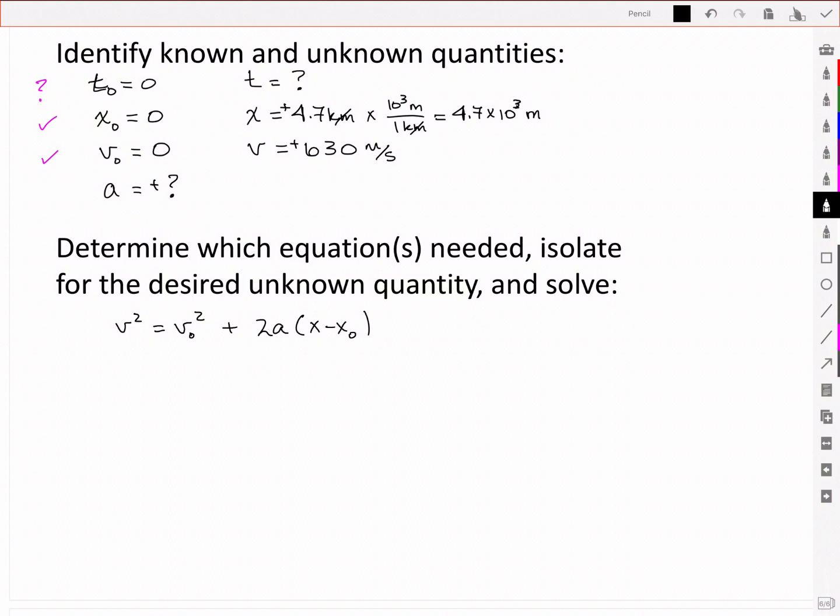What else do I know now? I know that v0 is 0. I know that x0 is 0. I don't know my acceleration, but I do know my final velocity. And it's the acceleration that I'm trying to solve for. And so I just need to rearrange that equation in order to isolate for the value that I want to solve for.